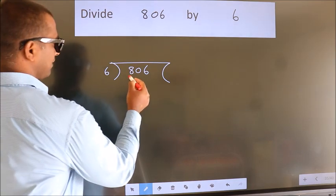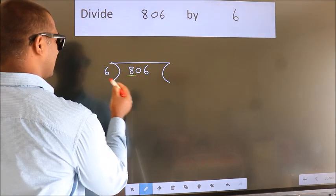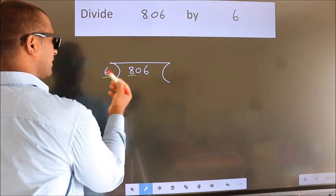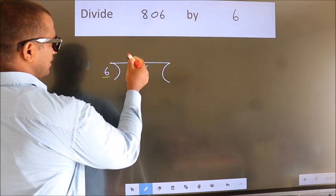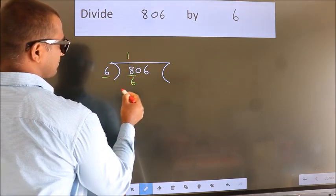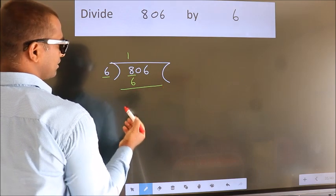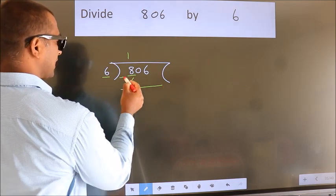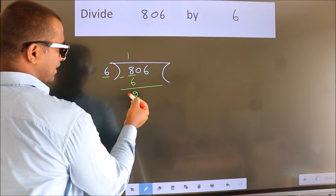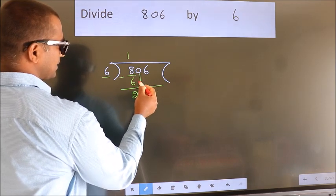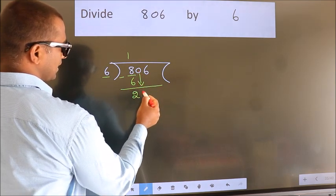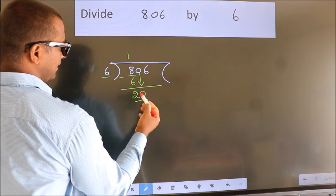Here we have 8, here 6. A number close to 8 in the 6 table is 6×1=6. Now we should subtract — we get 2. After this, bring down the beside number. So 0 down, so 20.